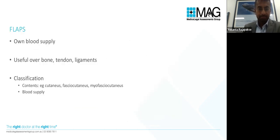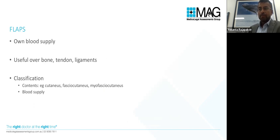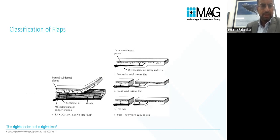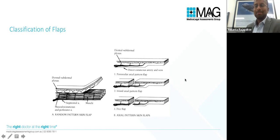A flap has its own blood supply, as opposed to a skin graft. This is especially useful over bone, tendon, and ligaments. Skin grafts are versatile but not a panacea — on avascular tissue like bare bone, tendon or ligament, a graft will usually not incorporate. A flap brings its own blood supply and can be classified as skin, fascia or muscle depending on the tissue supplied. Whether it's a named vessel determines whether it's a local or regional flap.